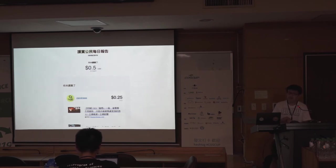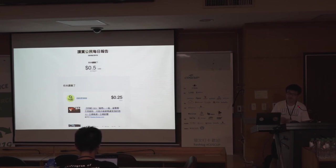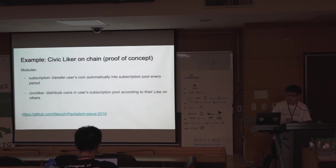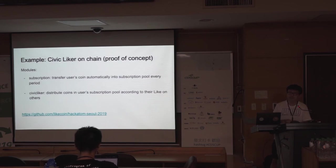The reason we have a daily report instead of instant distribution is that we are currently on Ethereum, and transactions on Ethereum are quite expensive — which is one of the reasons we want LiteChain. To reduce cost, we aggregate all the like events a user has and count them for each day instead of instantly. Therefore, in the hackathon, we wanted to build a module that calculates the distribution of coins and also handles subscriptions on-chain, so that it can be done nearly instantly — as a proof of concept of CivicLike on LiteChain.